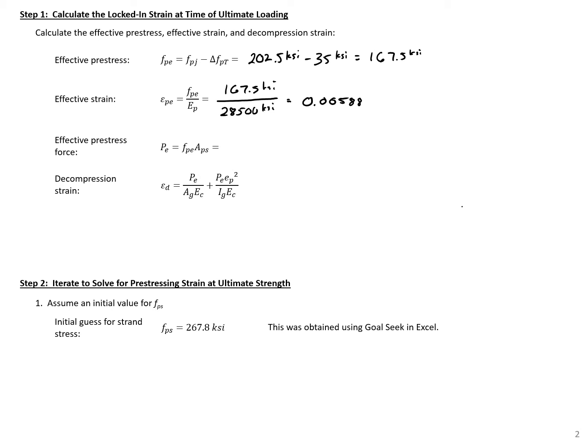Next, we need to find our effective pre-stress force. For this, we just have our stress, 167.5 KSI, times our strand area, 0.918 square inches, which gives us a force here of 153.8 kips.